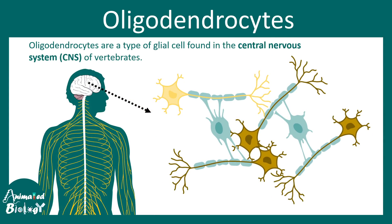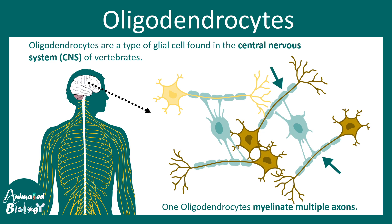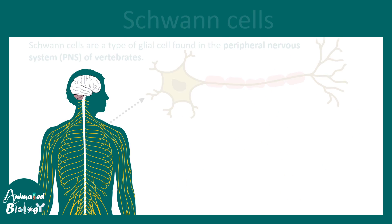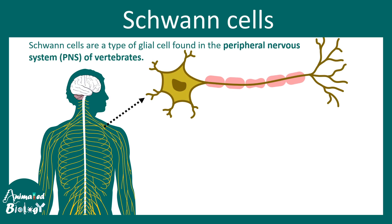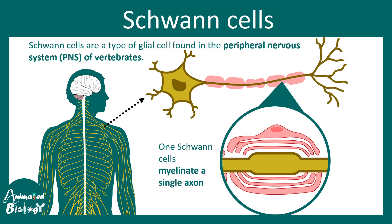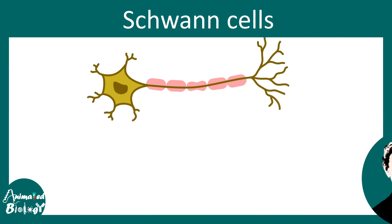Oligodendrocytes are a key glial cell type in the central nervous system, regulating the myelination process. It is important to remember that oligodendrocytes can myelinate multiple axons, whereas Schwann cells are present in the peripheral nervous system and one Schwann cell myelinates one axon.